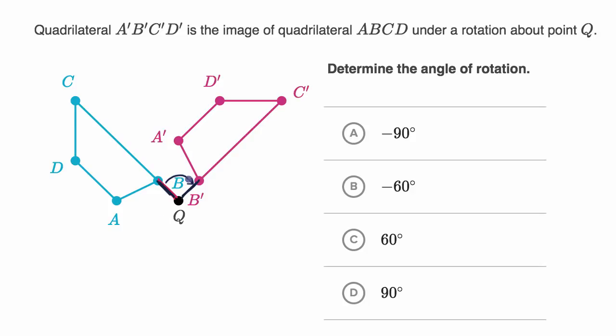So we're going from B to B prime right over here. We are going clockwise, so it's going to be a negative rotation, so we can rule that and that out. And it looks like a right angle. This looks like a right angle, so I feel good about picking negative 90 degrees.